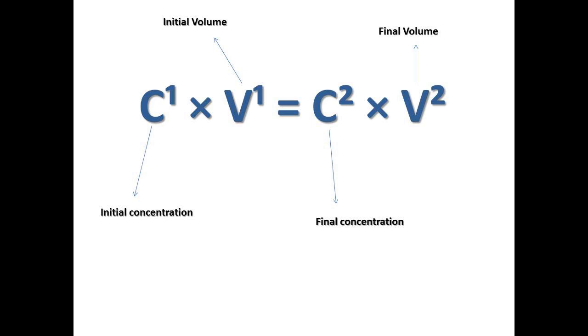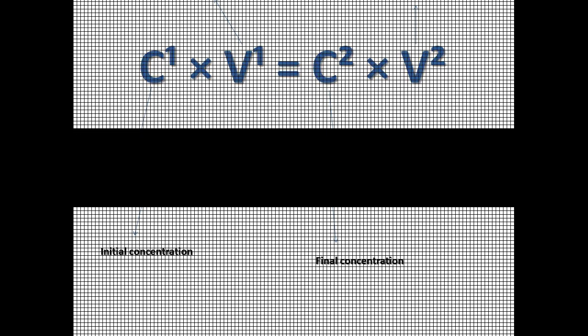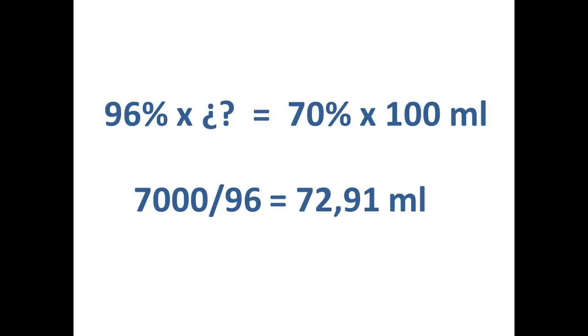As we know the data which we already have, we just need to put it in place. We have alcohol 96% initially, in which volume we desire to know. This is the X and is equal to the final volume which we want. For example, 100 ml multiplied by our final concentration which we are seeking for is 70%. We put all the data in place and as a result, we have 72.91, or if you prefer 73 ml of ethanol alcohol 96% which we need to have ethanol 70%.